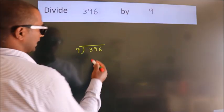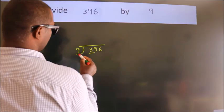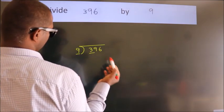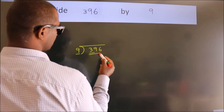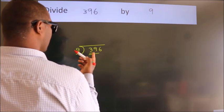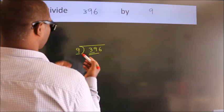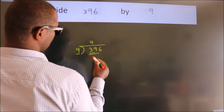Next, here we have 3, here 9. 3 is smaller than 9, so we should take two numbers, 39. A number close to 39 in the 9 table is 9 times 4 is 36.